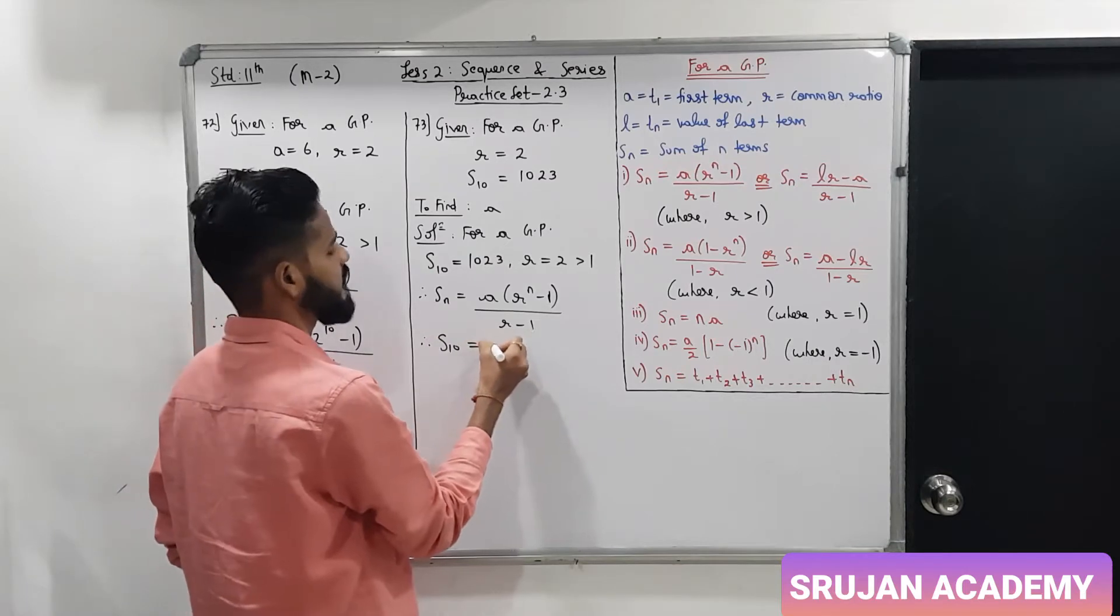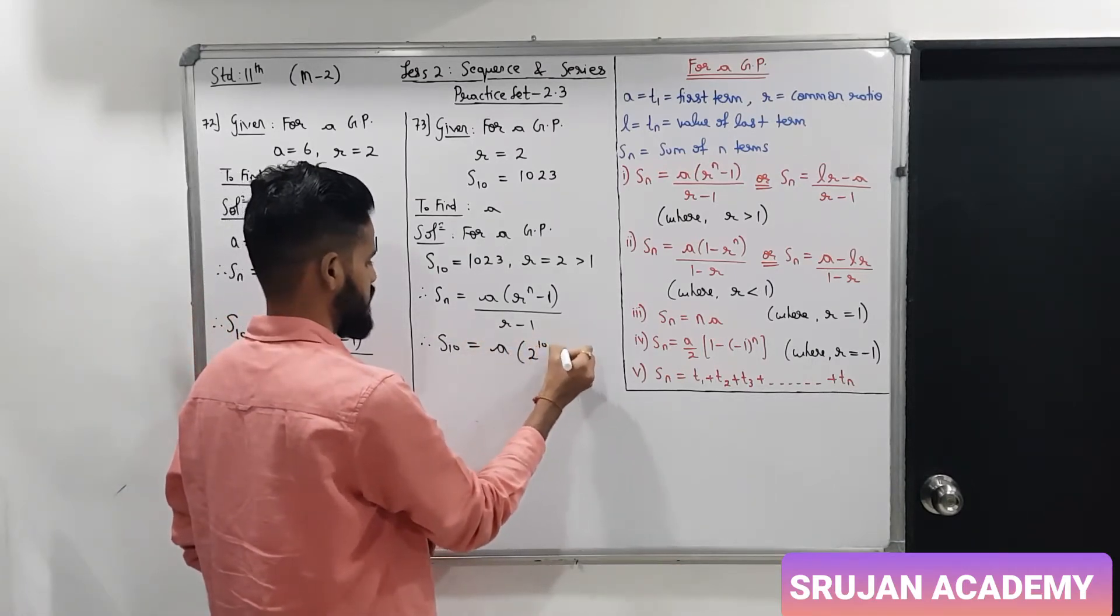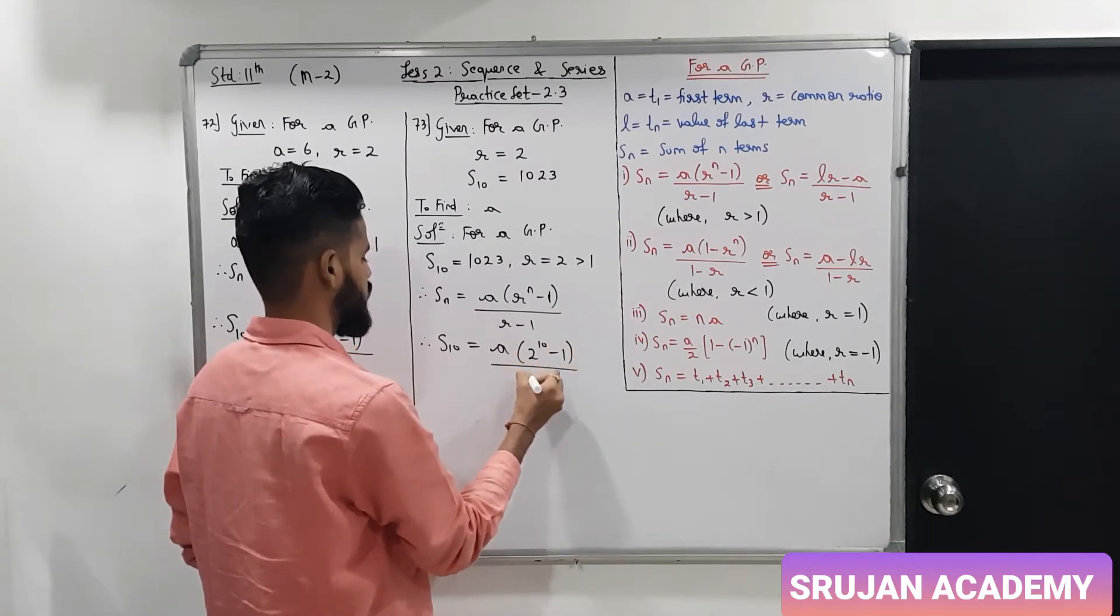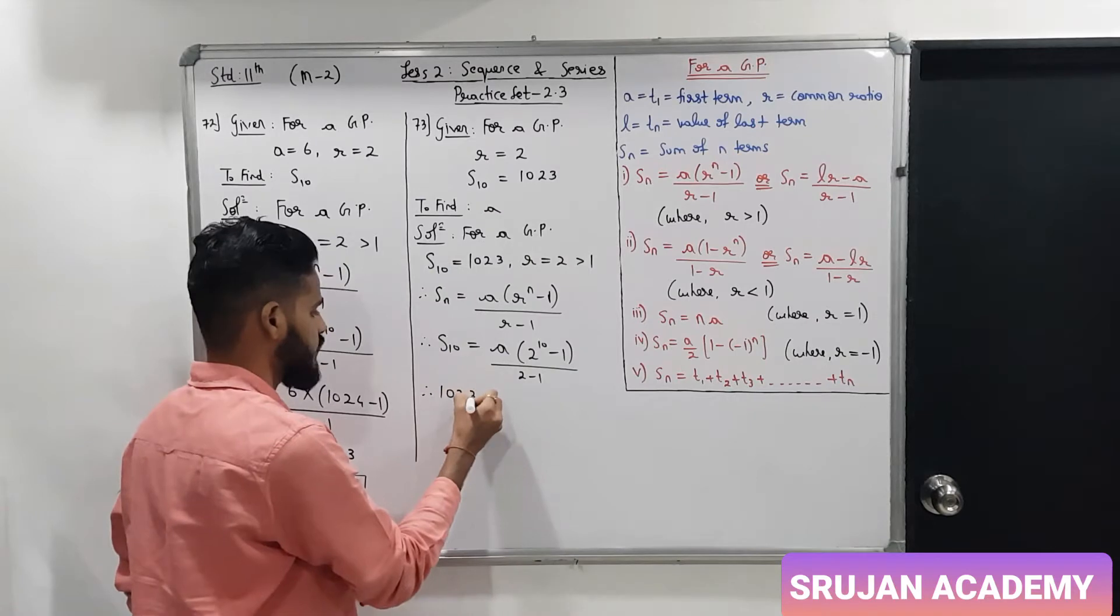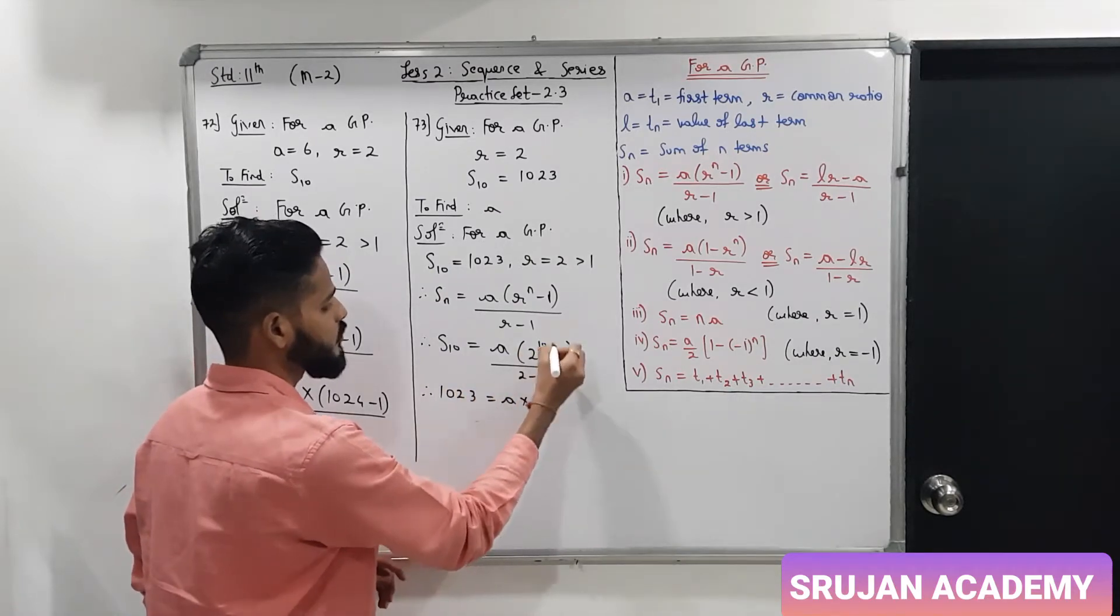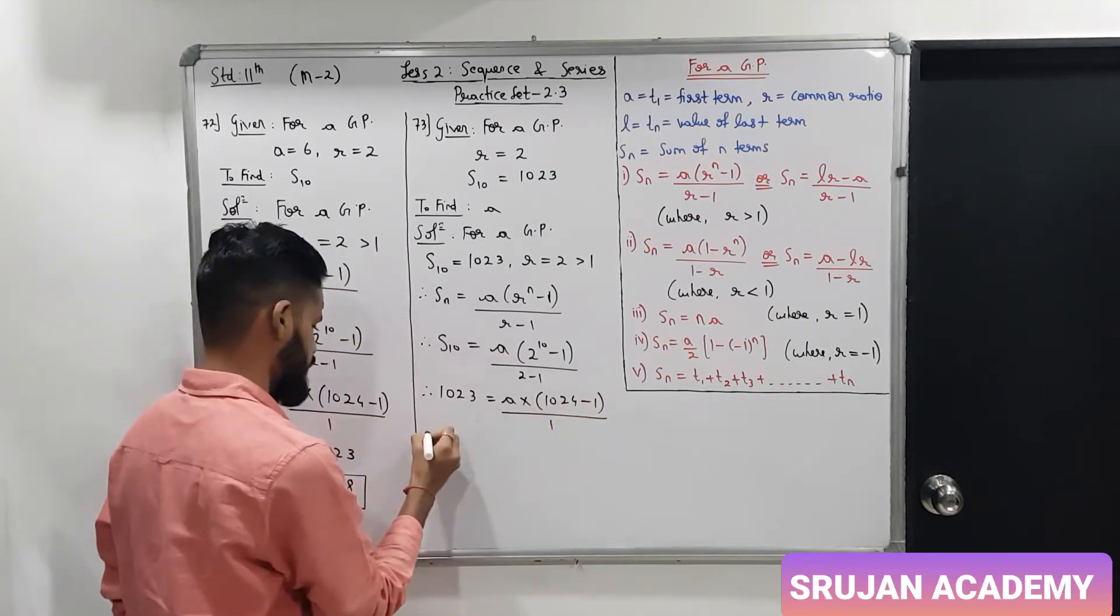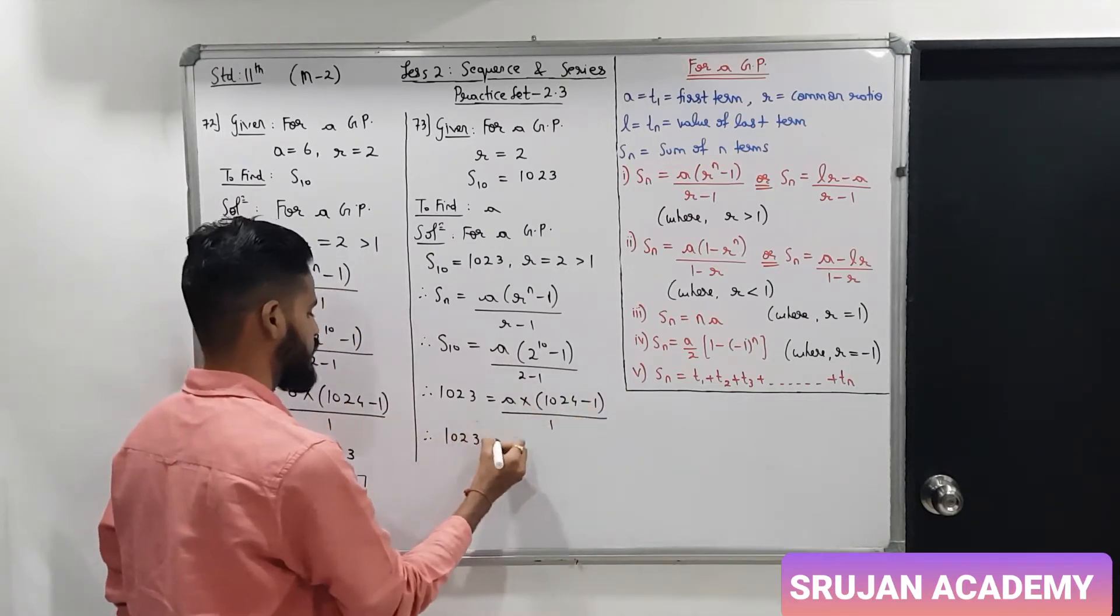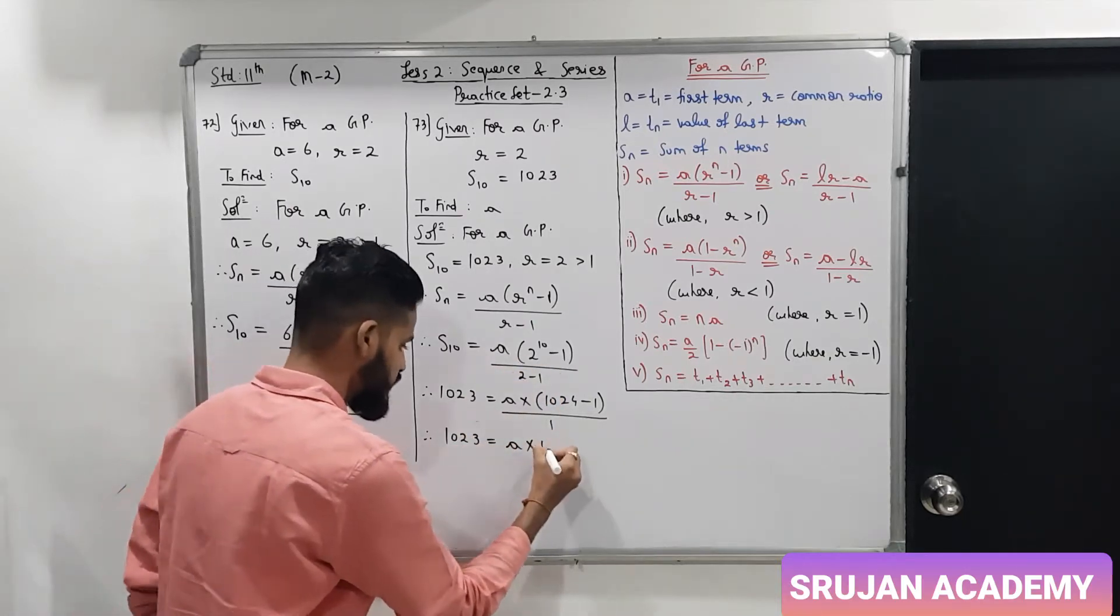N is 10, a value is unknown. R is 2 raise to 10 minus 1 upon 2 minus 1. Now, S10 is 1023 equals a into 2 raise to 10 is 1024 minus 1 upon 1.